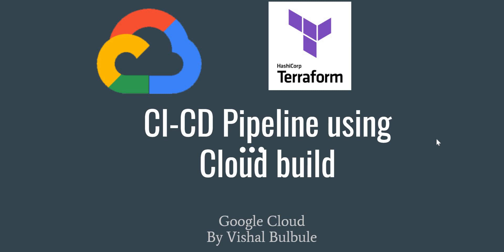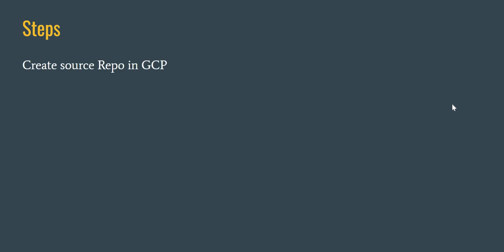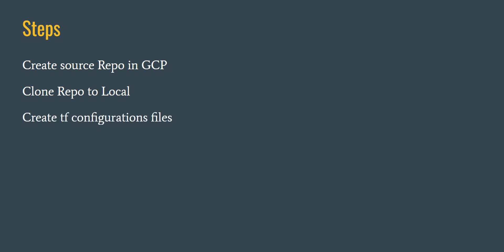Let me first walk through the different steps we are going to take for this demo. First, we will create a source repository in GCP. We are not creating a direct GitHub repository here — we will be using a Google-managed service, the source code repository in Google Cloud. We'll clone that repository to our local system in VS Code and create a sample Terraform configuration file to create a storage bucket. Then we'll create a cloudbuild.yaml which will have our pipeline code.